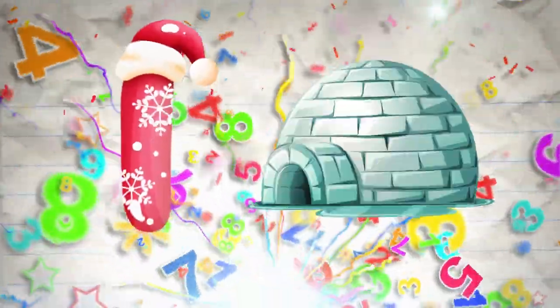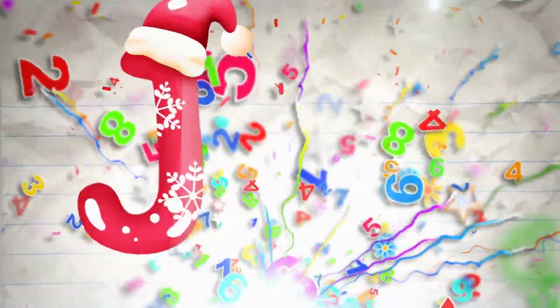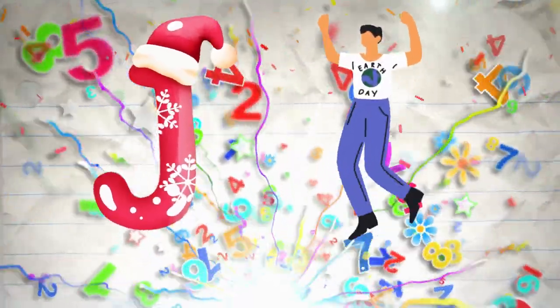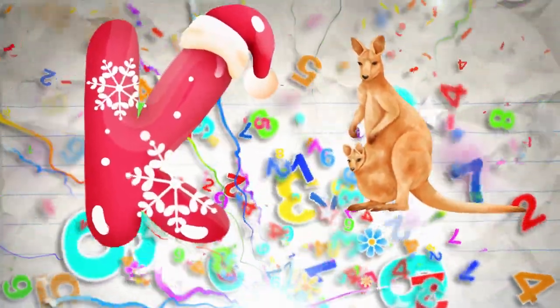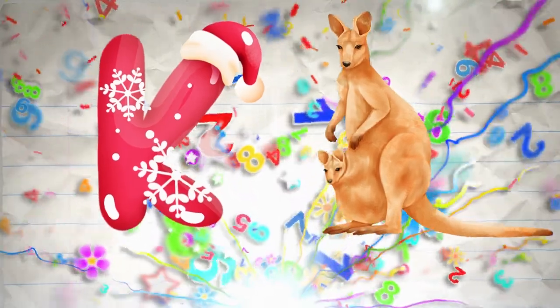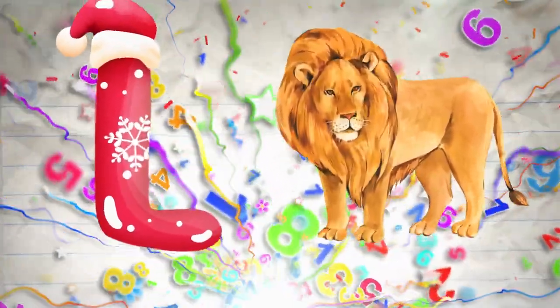I is for igloo, i-i-igloo. J is for jump, j-j-jump. K is for kangaroo, k-k-kangaroo. L is for lion, l-l-lion.